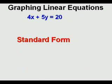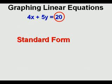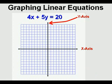Let's talk about standard form first. This is an equation in standard form: 4x plus 5y equals 20. The simplest explanation is that the variables are on one side of the equation and a number is by itself on the other side. There are a couple other rules, like the x variable has to be positive and the coefficients have to be the smallest integers possible, but we won't worry about those conditions.